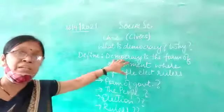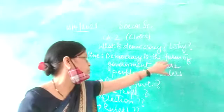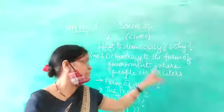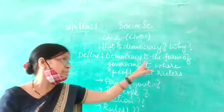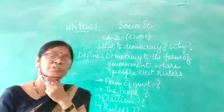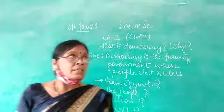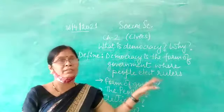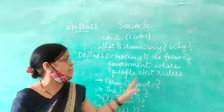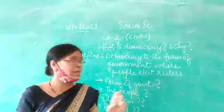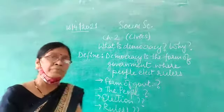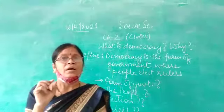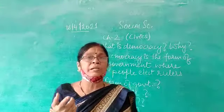Democracy is the form of government where people elect rulers. That means this is such a form of government where people are the ones to elect rulers. When we say this simple definition, so many questions arise in our mind. These are general questions.